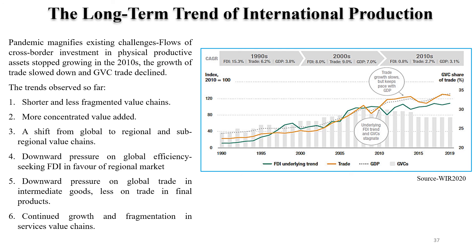Due to COVID-19 and even before COVID-19 — following the trend observed since 2010 — value chains are less fragmented because a lot of mid-line companies have come up who have taken into account many activities. Earlier it was fragmented, but then there is an agglomeration because these mid-sized companies have taken some activities under their control. There is also a shift from global to regional to sub-regional value chains.